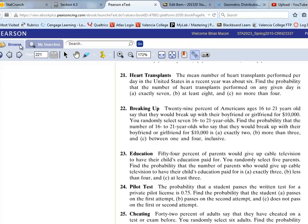So for number 21, you're going to notice that problem says the mean number of heart transplants performed per day in the U.S. in a recent year was about 6. Now, find the probability that the number of heart transplants performed on any given day is part A says exactly 7, part B says at least 8, and part C says no more than 4.